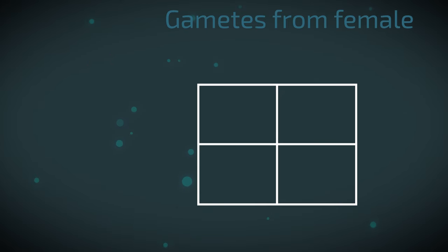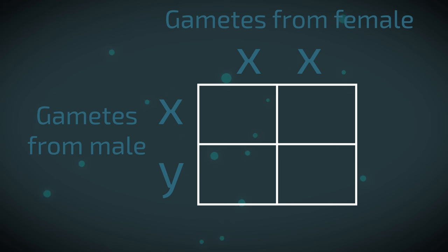If we looked at this in a Punnett square, the gametes from the female would always be X. So XX and the gametes from the male would be either X or Y. Can you complete the Punnett square to show the probability of having a male or a female child? Pause the video, complete the Punnett square and click play when you're ready to check.